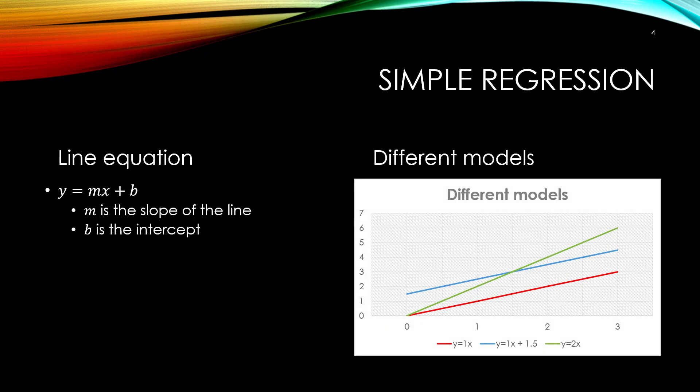How do we model the relationship between x and y so that we can use x to predict y? For simple regression, our predictive model is based on the line equation. The line equation is written as y equals mx plus b, where m is the slope of the line and b is where the line intersects with the y-axis. Changing the slope and intercept, or m and b, we get different lines.